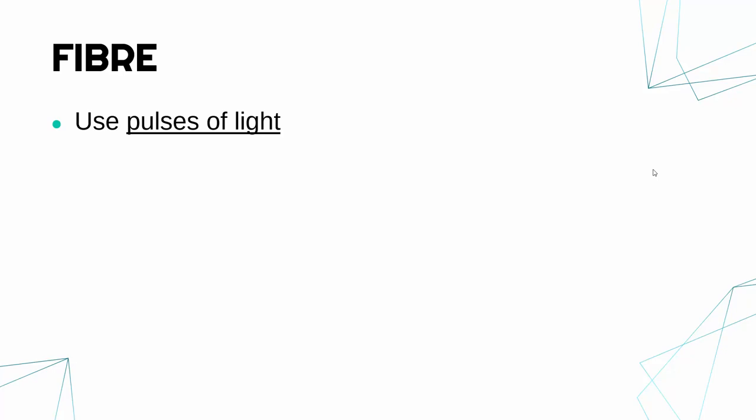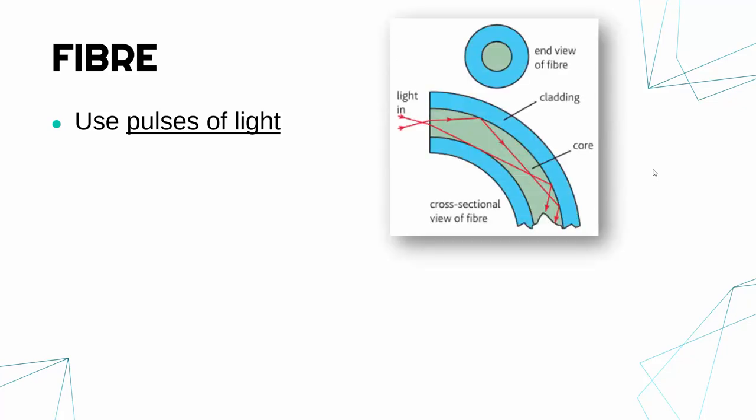The data is sent by flashing a laser down a wire, and that is how the data is transferred. Remember data is being sent as binary. Binary is just zeros and ones. And so you can imagine a light being pulsed on and off really fast can be used to send binary data.